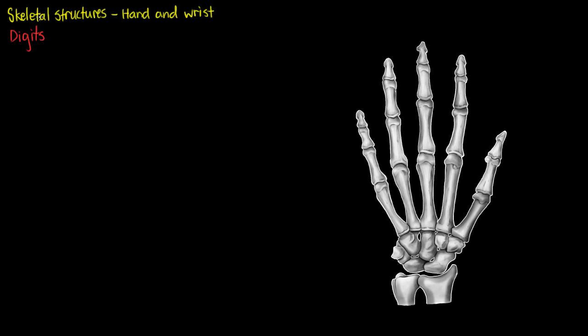Digits are named as such for either our hand or our foot. If someone said they had an injury to the second digit of their right hand, they would mean their pointer finger.